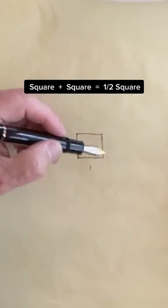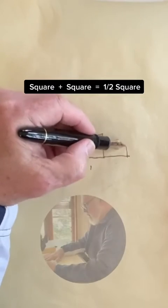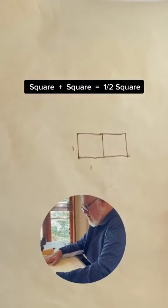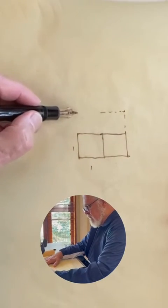One of the combination capabilities of a square is if you add another square to the square, you end up with what really is half of a larger square.